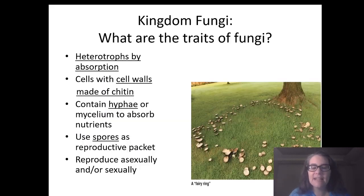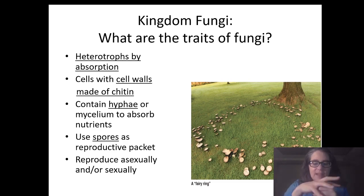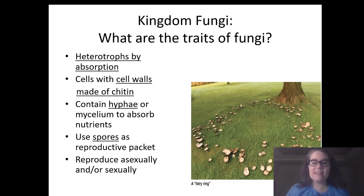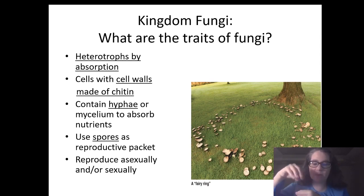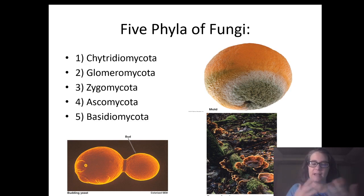If we look at fungi, they have some structural differences. They have cell walls, but instead of cellulose like plants, fungal cell walls are made of chitin, a different kind of sugar. They also have hyphae — tube-like structures that enable them to release chemicals and then absorb nutrients, growing on the surface of dead and decaying materials or living as parasites. Fungi get their energy by being heterotrophs by absorption. There are five phyla of fungi, separated based on how they reproduce and their spore structures.